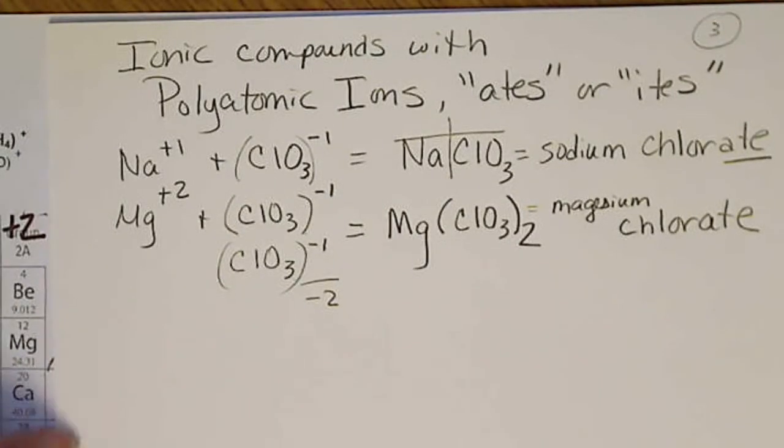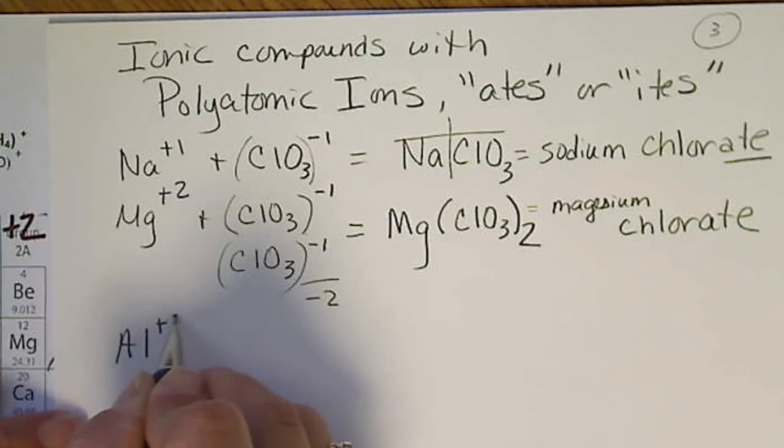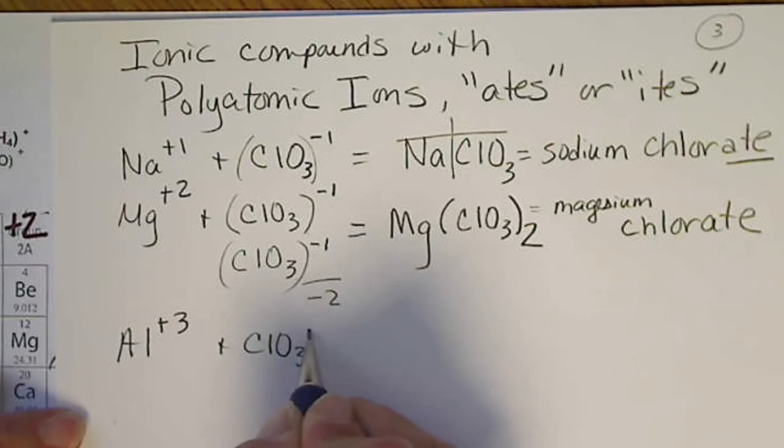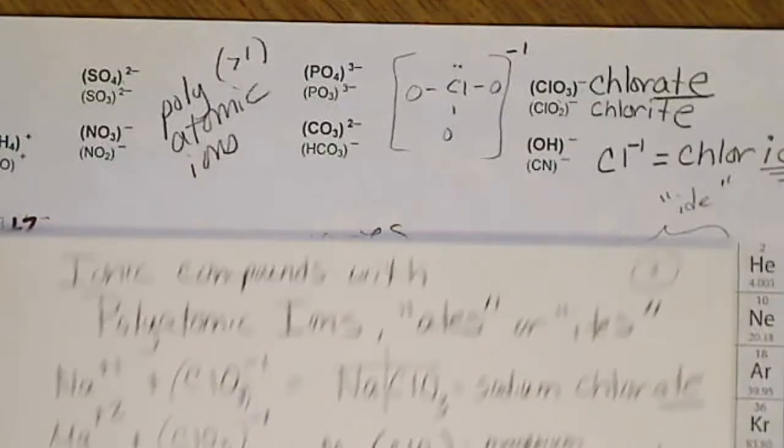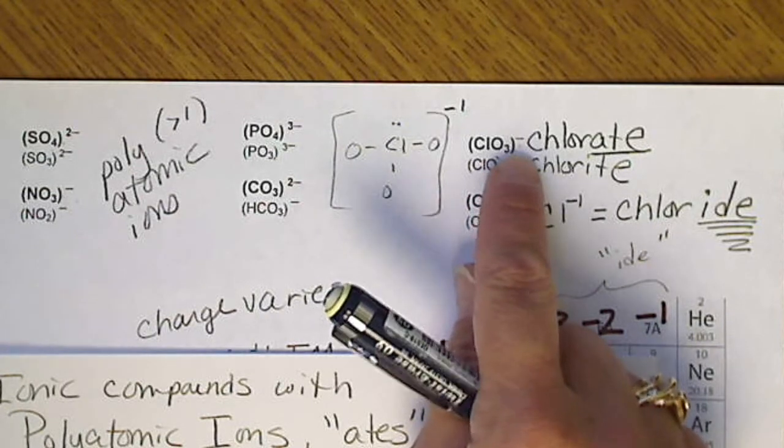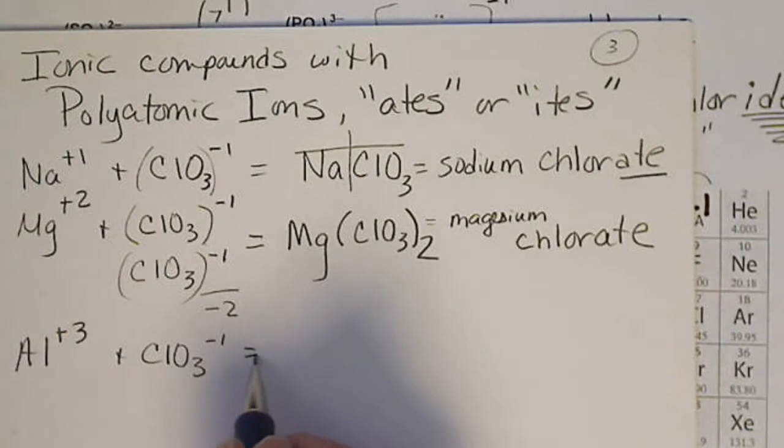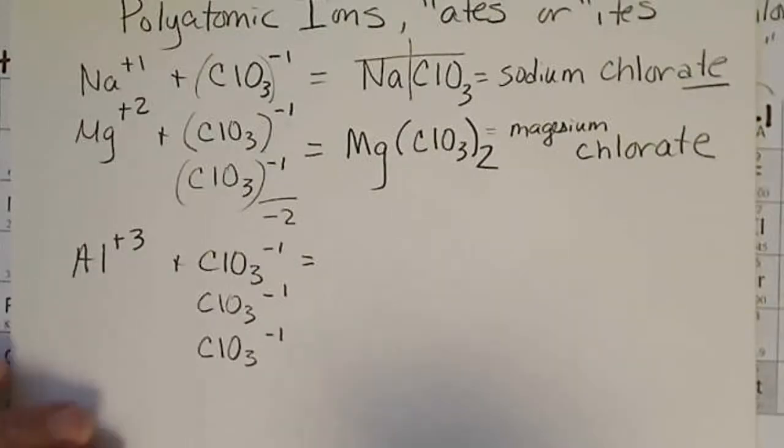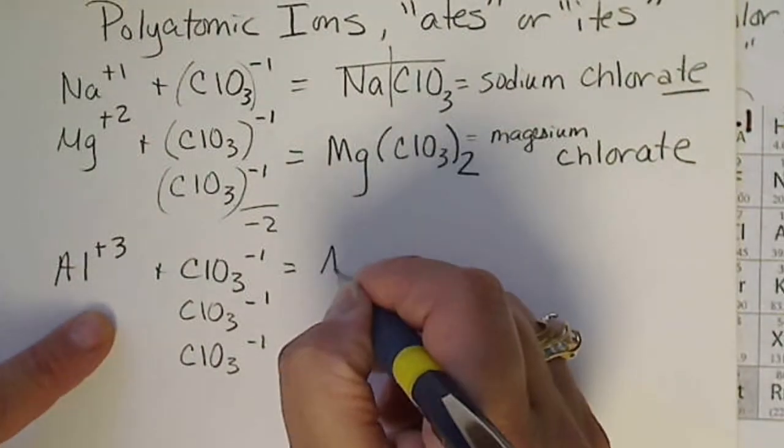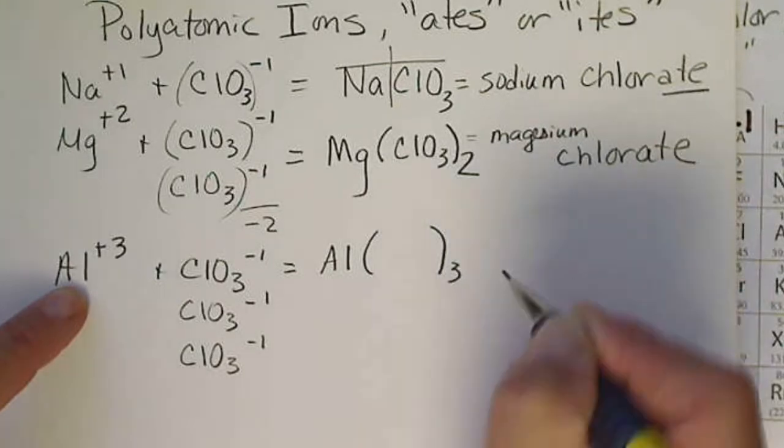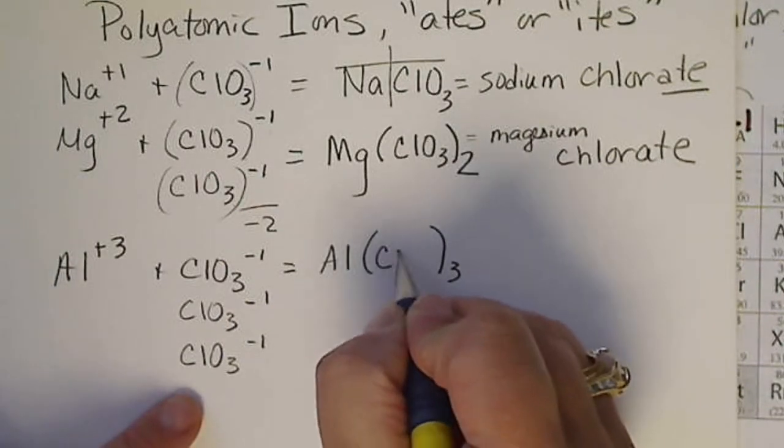Let's put aluminum together with chlorate. Aluminum is a plus three, and chlorate is a minus one. And we can look on the blue sheet to see the charge. Remember, a minus sign by itself is a minus one. So we need three of these minus one charges, because the charges have to cancel to zero. So we would have one aluminum and three of these chlorate ions.